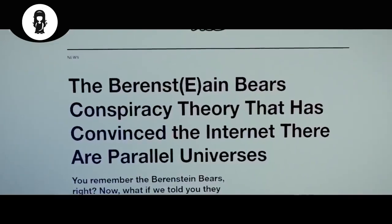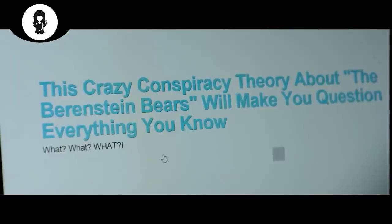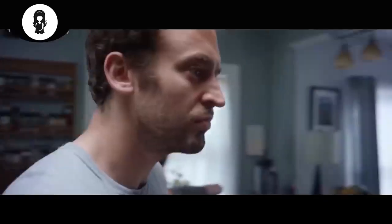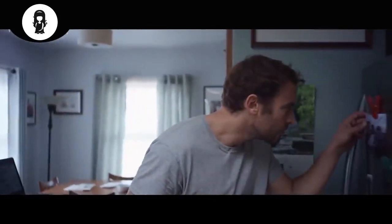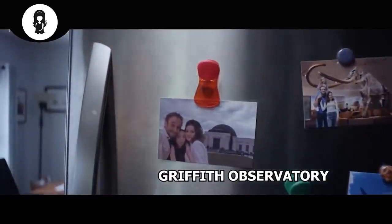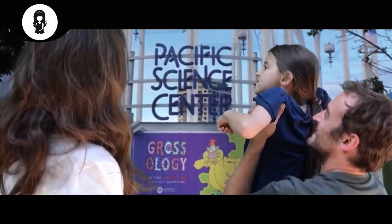Brendan continues to look for information until he finally finds a theory that explains the incident, namely the Mandela Effect theory. The next day, Brendan is confused by the photo of his family on the refrigerator. He asks his wife where the photo was taken, and Claire replies that it was taken in front of the Griffith Observatory. But Brendan is very sure that they took pictures at the Pacific Science Center in Seattle.